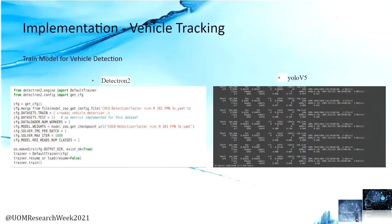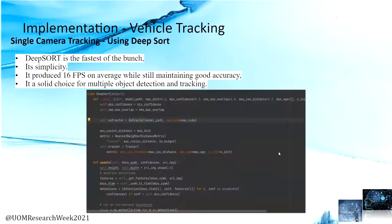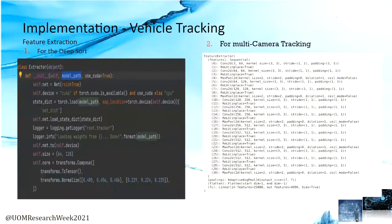For vehicle detection, we compared two famous network architectures, Detectron and YOLO V5, with the same dataset and same hyperparameters. For single-camera tracking, we use DeepSort, which is a great algorithm producing 16 FPS while maintaining good accuracy. For feature extraction during single-camera detection and tracking, we use VGG16. As the next step, for feature similarity we need to create a mean feature vector.